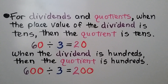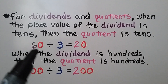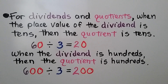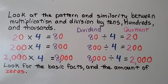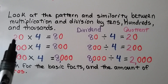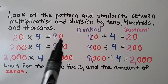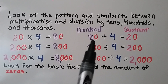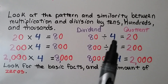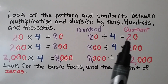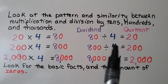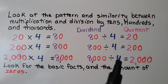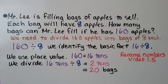For dividends and quotients: when the place value of the dividend is tens, the quotient is tens; when the dividend is hundreds, the quotient is hundreds. Look at the pattern between multiplication and division. We have the basic fact 2 times 4 equals 8. With 80 divided by 4, we see the basic fact 8 divided by 4. There's one zero in the dividend, so there's one zero in the quotient — that's when dividing by a one-digit number.